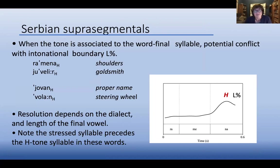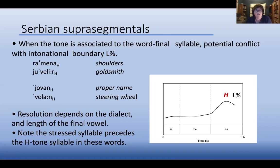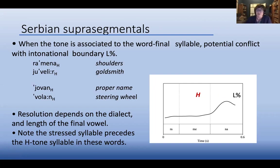Today I want to talk about a possible conflict with intonation. When the tone is associated to the word-final syllable, there's a potential conflict with the intonation boundary tone. In words like Romana, Juvelier, Jovan, and Volan, you have a high tone on the final syllable. What happens if you also need to associate a low boundary tone to that final syllable? The resolution of this possible conflict depends on the dialect and the length of the vowel, with the high tone potentially retracting onto the stressed syllable.